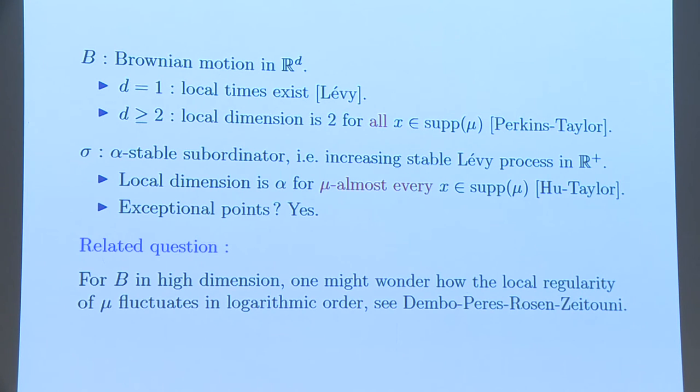Let us just mention another related question. For Brownian motion in higher dimension, we don't have local times, and the local dimension is a constant for all the points, but we can consider some fluctuation for the regularity of this measure with logarithmic order. This is a work in the early 2000s. We can see a paper by Dembo-Peres, Rosen and Zeitouni.